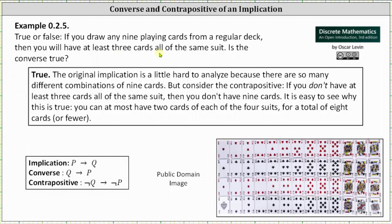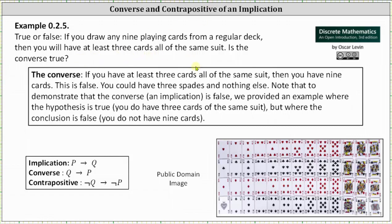And now let's consider the converse of the original implication. Remember to form the converse we interchange the conclusion and hypothesis or Q and P. The converse is if you have at least three cards all the same suit then you have nine cards, and this is false.